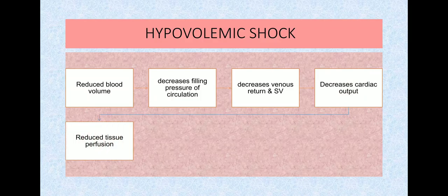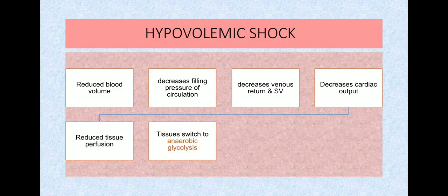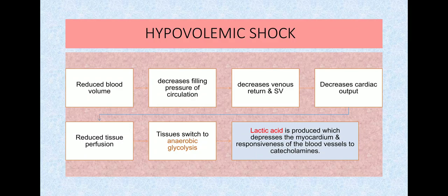Consequently, cardiac output—the blood pumped per minute—is reduced. The tissues aren't getting enough perfusion, so they have no option but to switch to anaerobic glycolysis. Due to anaerobic metabolism, lactic acid is produced, which depresses the myocardium further and deteriorates the shock. Lactic acid also reduces blood vessel responsiveness to catecholamines. This is the development of hypovolemic shock.